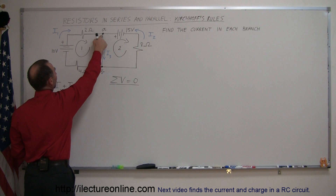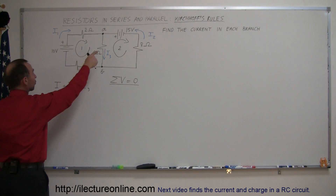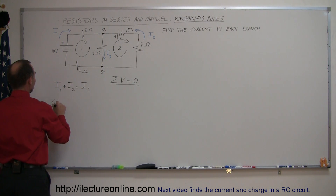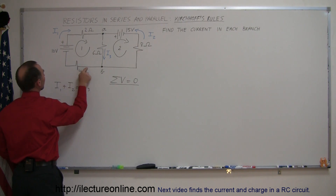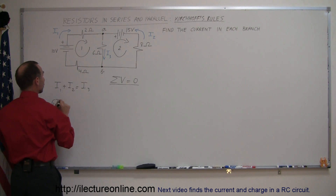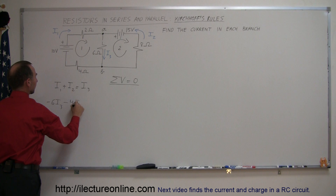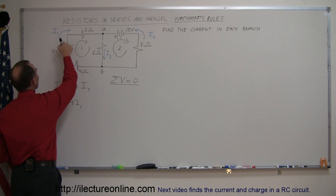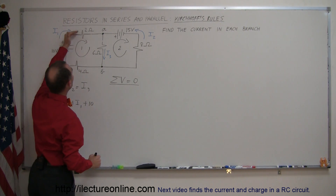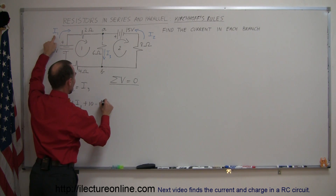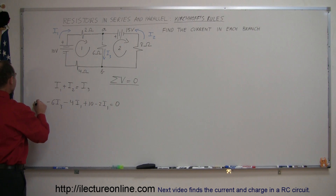Starting from A, I'm going to cross this resistor right here going with the current — that gives a voltage drop of 6 times I3. Coming around the corner across the next resistor, again going with the current I1, so the voltage drop is minus 4I1. Then across this battery going from the negative end to the positive end — that's a voltage rise of plus 10 volts. Then going across the last resistor with the current, so minus 2I1. Getting back to A, all those voltage rises and drops should add up to zero. That's the second equation, from loop number 1.